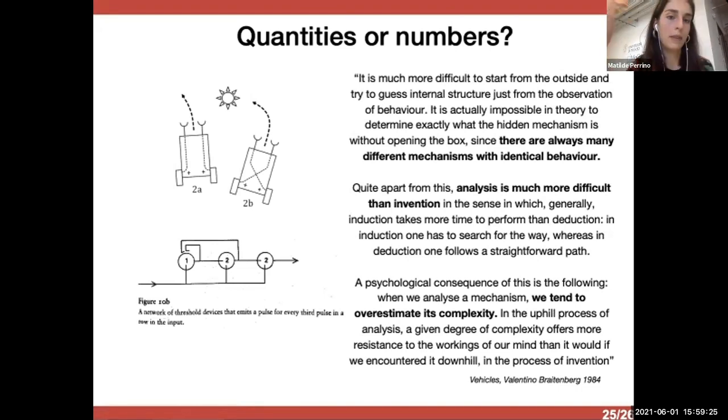And so, this is just a little quote from the book where it says that it's actually impossible in theory to determine exactly what the mechanism is without opening the box, since there are always many different mechanisms with identical behavior. So, the analysis is much more difficult than invention in the sense that induction takes more time to perform than deduction. In induction one has to search for the way, whereas in deduction one follows a straightforward path. And a consequence of this is the fact that we tend to overestimate the complexity when we analyze a mechanism. And I think this can, in a certain way, apply also to this case.